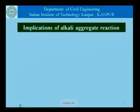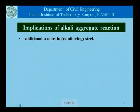What are the implications of alkali aggregate reaction? It leads to additional strains in reinforcing steel. We know that concrete is very often used with reinforcement, and reinforcing steel is an integral part of a lot of concrete construction. If the concrete has alkali aggregate reaction, what happens to the reinforced concrete which is a composite made out of steel and concrete?